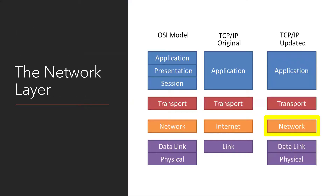The network layer on the OSI model is the third layer. On the original TCP/IP model it was the second layer, and on the updated TCP/IP model it is the third layer. Because there are a lot of slides, I'm just going to run through quickly — if anyone has questions they can raise those and I'll try to answer them as we go along.